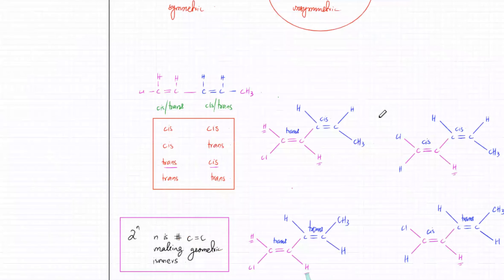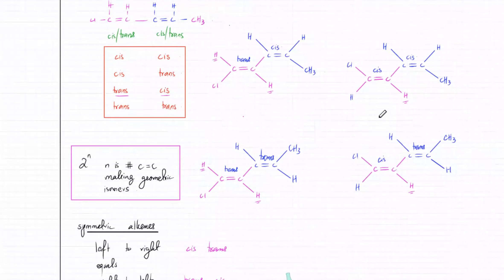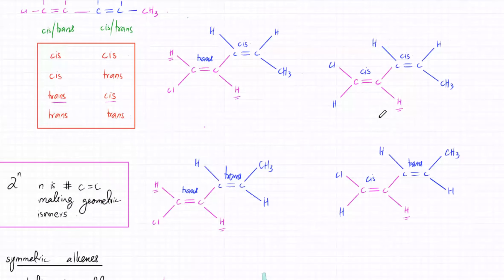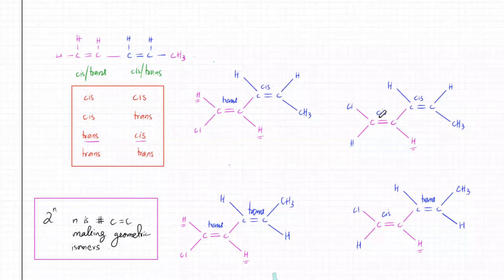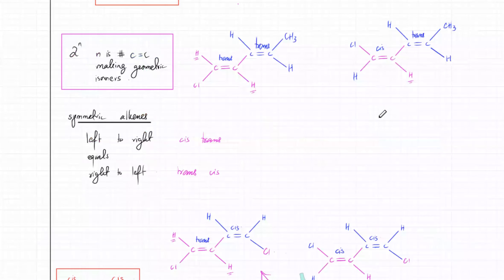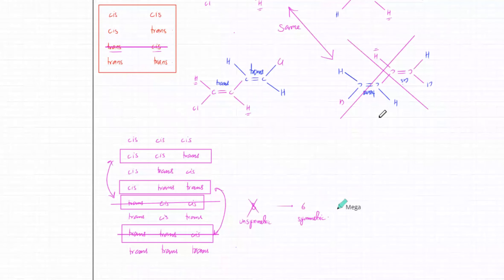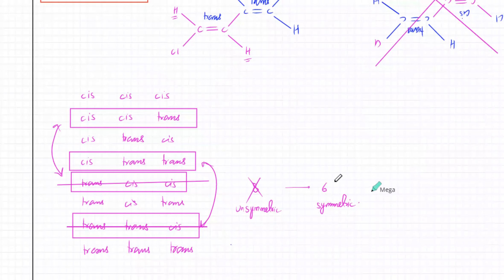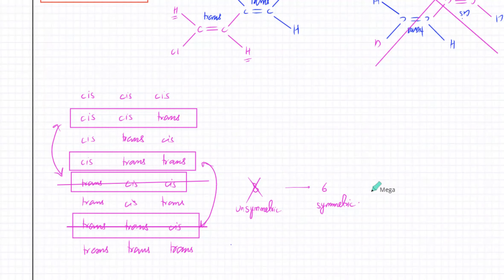We'll try and do some questions tomorrow, finish with optical isomers, and do some past paper questions as well. Just make sure this part is clear — it can be confusing. Unsymmetric: use 2^N if you have multiple double bonds. Symmetric: some combinations are no longer unique because left to right and right to left look exactly the same.